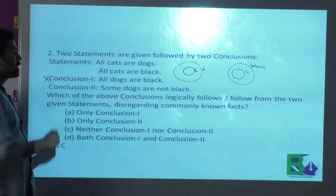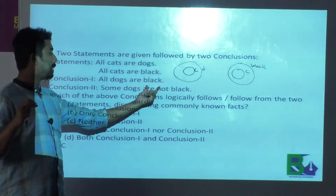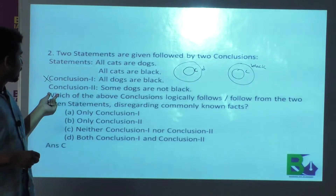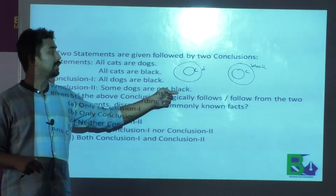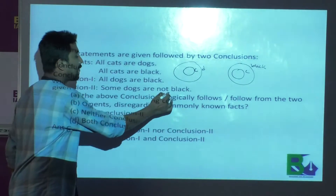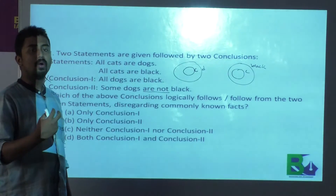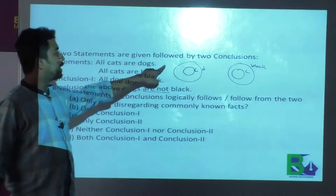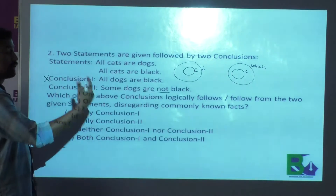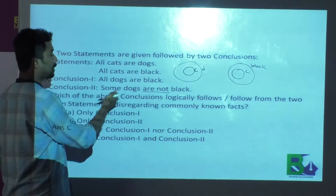So directly you can say that conclusion one is wrong. We cannot determine any particular relationship between black and dog. Now let us see conclusion two: some dogs are not black. When there is a statement in negative form, we should always try to draw an alternative diagram. We have already got one diagram, but we should now try to find an alternative diagram which may be opposite to this.